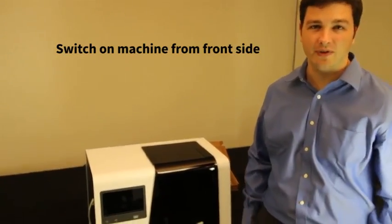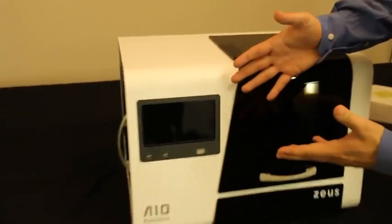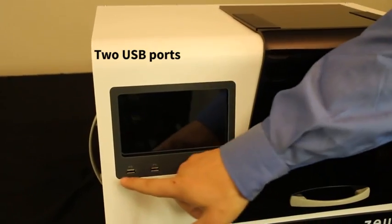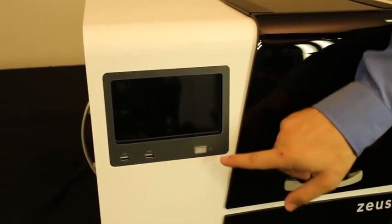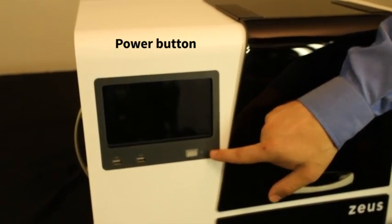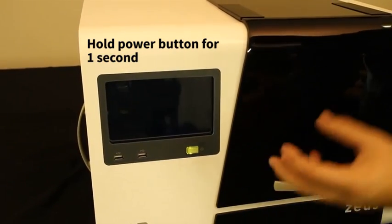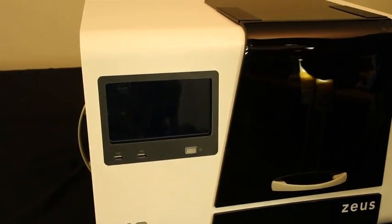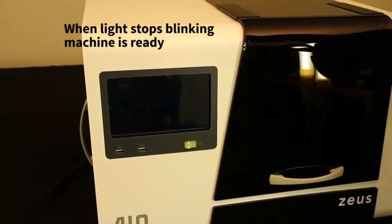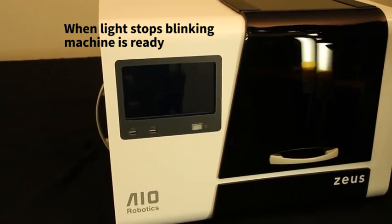Next, let's switch on the machine from the front side. Here you can see the screen of the machine and two USB ports right underneath. And here is the power button that you have to press. You start pressing for one second. It will switch green. And then after a while, after it stops blinking, it will stay green and that means the machine is ready.